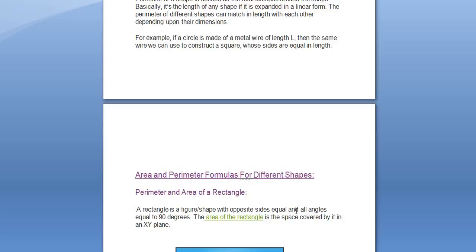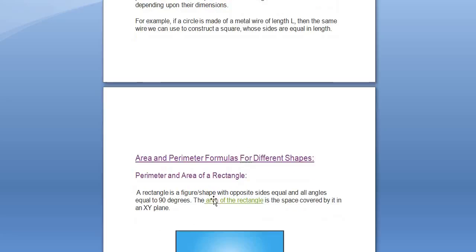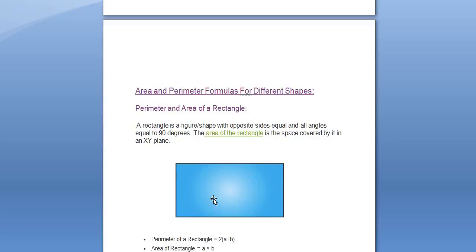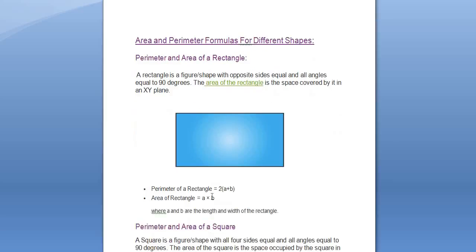I would discuss some of the formulas for different shapes for area and perimeters. Beginning off with the rectangle. A rectangle is a shape with opposite sides equal and all angles equal to 90 degrees. The perimeter of the rectangle is given by 2 into A plus B and the area is given by A into B, where A and B are the length and width of the rectangle.